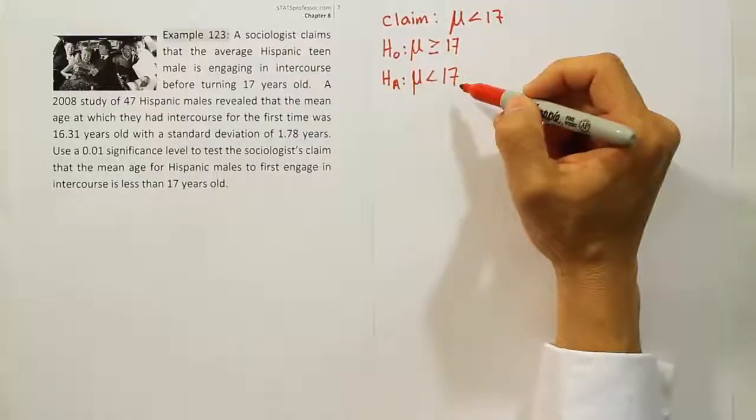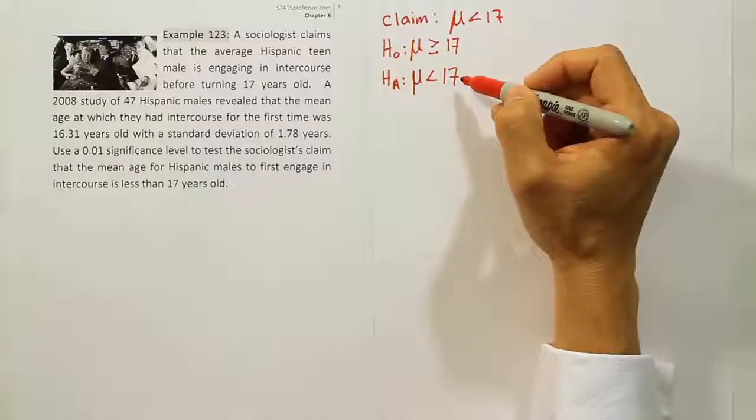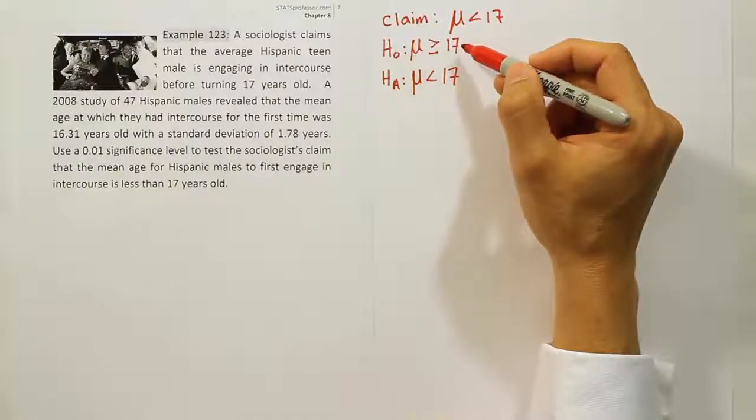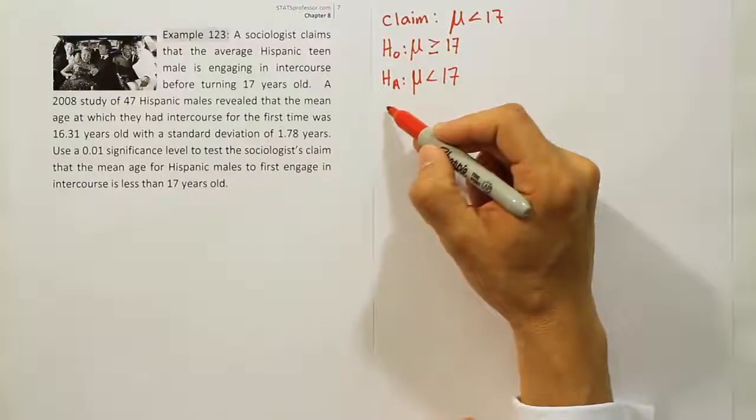This is saying that on average Hispanic males are having sex prior to 17. This is saying they're waiting to be 17 or older to have sex. So these are our two competing hypotheses. Now we collect our data.